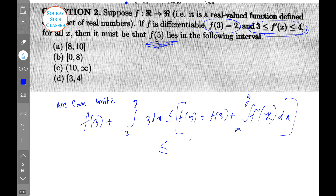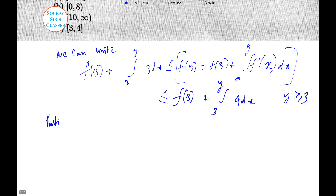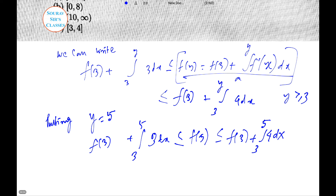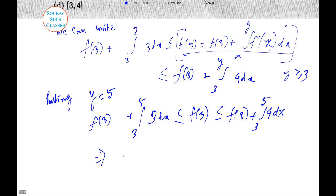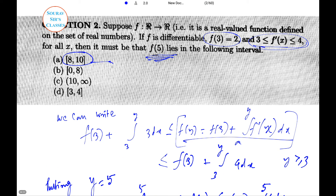This is less than or equal to f(3) plus the integral from 3 to y of 4 dx, where y equals 3. Putting y equal to 5, this gives f(3) plus the integral from 3 to 5 of 3 dx, which is less than or equal to f(5), less than or equal to f(3) plus the integral from 3 to 5 of 4 dx. After minor calculation this leads to 8 ≤ f(5) ≤ 10. So f(5) lies in the closed interval [8, 10].